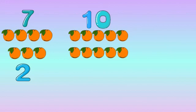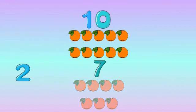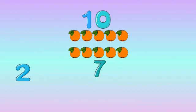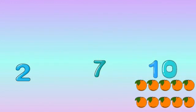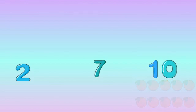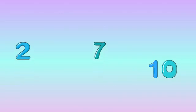The next number is 7 with 7 oranges, and the biggest of them is 10 with 10 oranges. So again we have placed the numbers from small to big: 2, 7, 10.